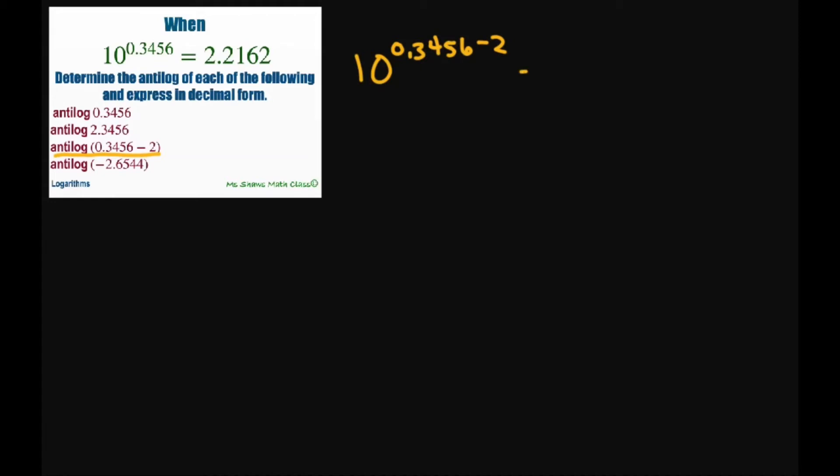All right, this is going to equal 10 to the power of 0.3456 times 10 to the power of negative 2. We already know what this one is. So this is going to be 2.2162 times 1 divided by 100, or you can just say 10 to the power of negative 2. That means we're going to move the decimal over two places. So this is going to equal 0.022162.